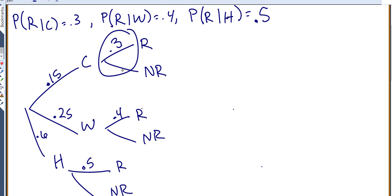Now each set of these sets of branches has to add up to 1 as well. So if this is 0.3, this would have to be 0.7, 0.6, and 0.5. Because again, each little set of branches has to add up to 1.